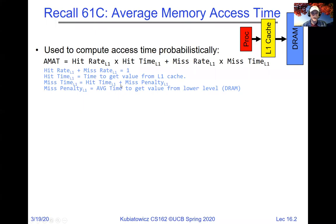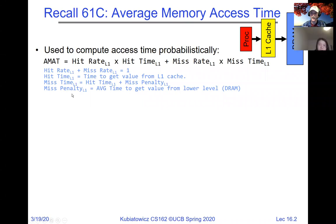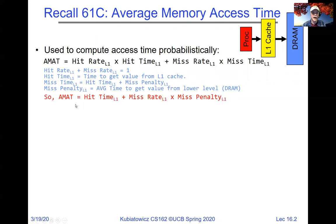The hit time is the time to get the value from the cache if it's there — that depends on the speed of the cache itself. The miss time is the time you incur when you miss, which involves grabbing it from DRAM and getting it to the processor from the L1 cache. That's hit time plus miss penalty together. The miss penalty is the average time to get a value from the lower level, in this case from DRAM.